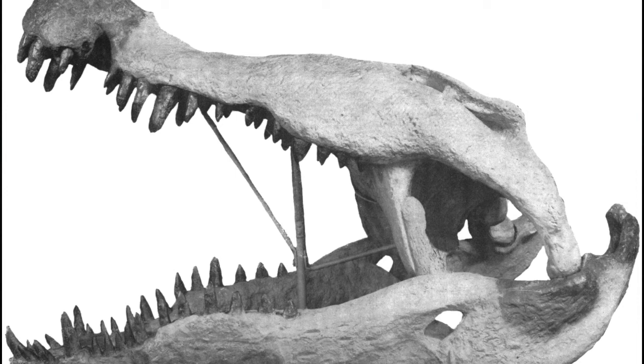Modern Crocodilomorpha ranged from the giant Deinosuchus from the late Cretaceous, which had a length of over 10 meters, to the tiny Hoplosuchus from the late Jurassic that measured only 20 centimeters in length. They are all characterized by having osteoderms, but exhibit a wide diversity of body shapes and diets.